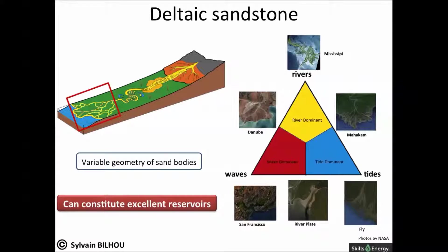The geometry of delta systems and the associated marginal marine lithologies is controlled by the interplay of wave, tidal, and river energy. The triangular diagram developed by Galloway and Eliot illustrates the dominant process in each modern delta. Three delta types are observed: river-dominated, wave-dominated, and tide-dominated delta. The size and geometry of the sand bodies that develop in the delta depend partially on each type of delta.